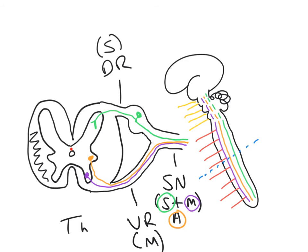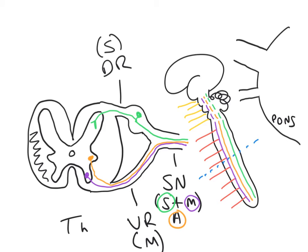Something very similar is taking place in the brain stem itself. To illustrate this, let's take the example of the trigeminal nerve. Here's just one half of the pons, which is where the trigeminal nerve emerges from. The trigeminal nerve has actually got two components: a quite large sensory component and a much smaller motor component. So to recap: this is the pons of the brain stem, this is the large sensory component, and this is the smaller motor component.